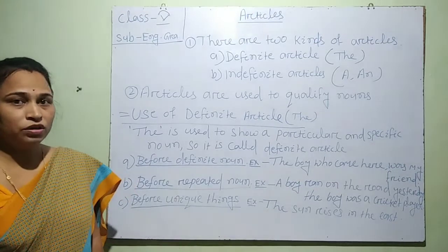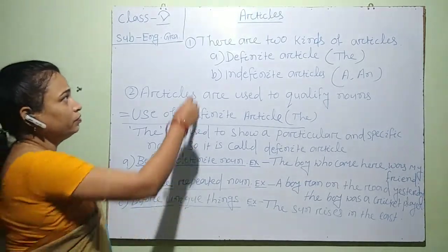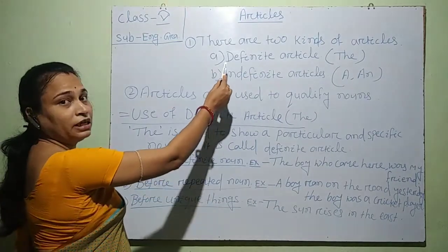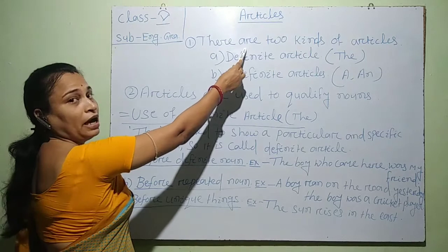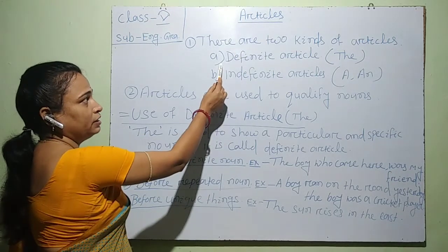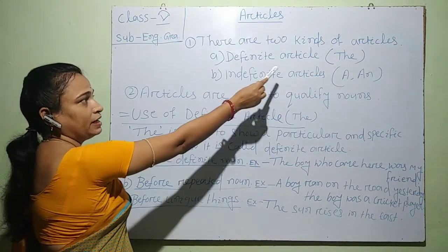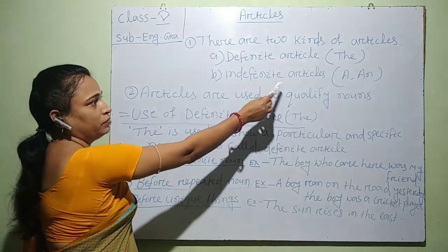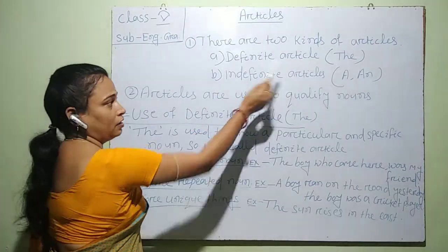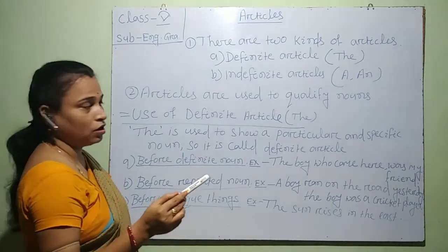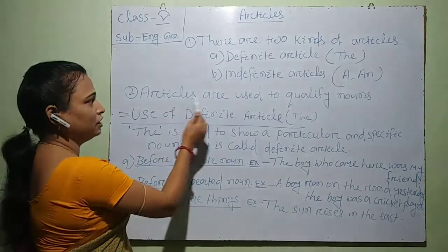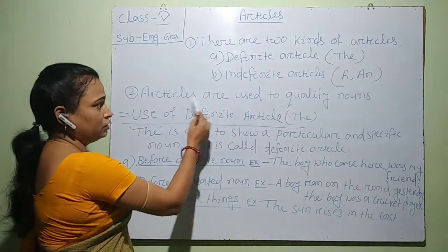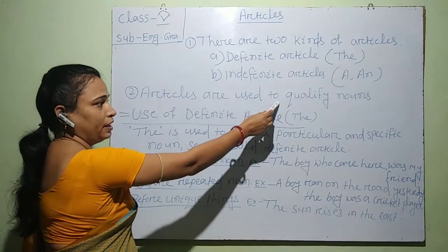We have learned that there are two kinds of articles. One is the definite article, that is 'the', and the other kind is the indefinite articles, that are 'a' and 'an'. We also learned that articles are used to qualify nouns.